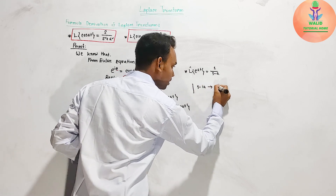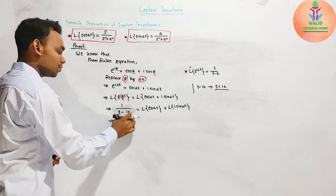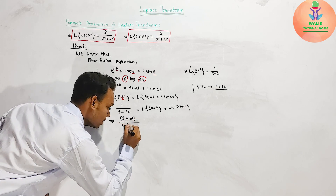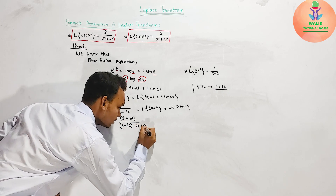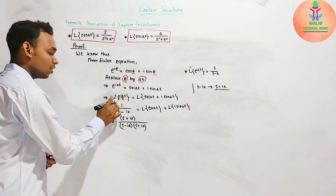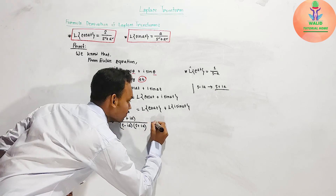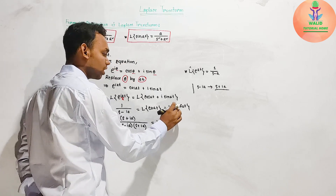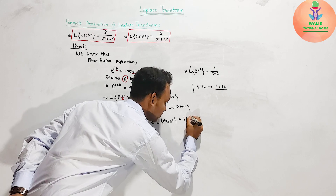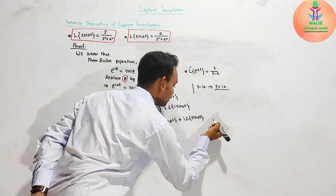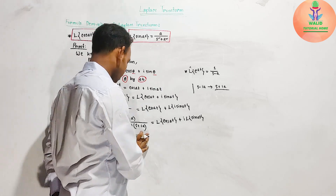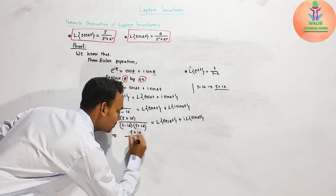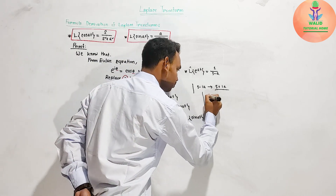Now, to simplify 1/(s minus ia), we multiply numerator and denominator by the conjugate (s plus ia). So we get (s plus ia) divided by (s minus ia) times (s plus ia), which gives (s plus ia) divided by s² minus (ia)². The Laplace transform of cos(at) plus i times the Laplace transform of sin(at) equals (s plus ia) divided by this expression.